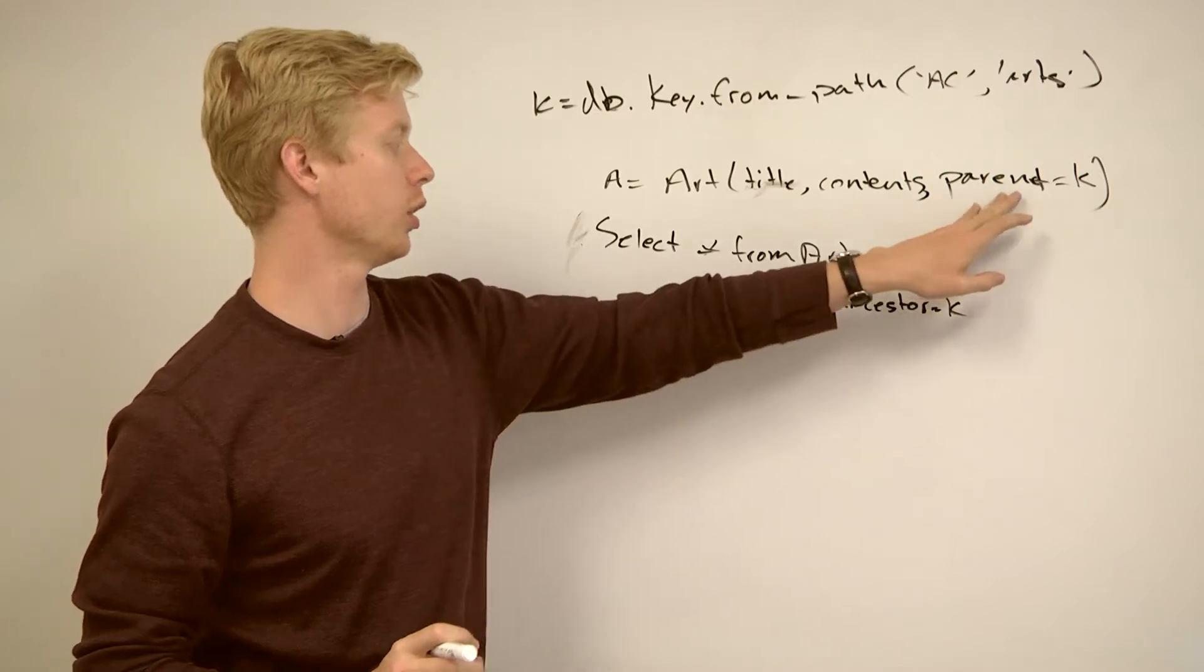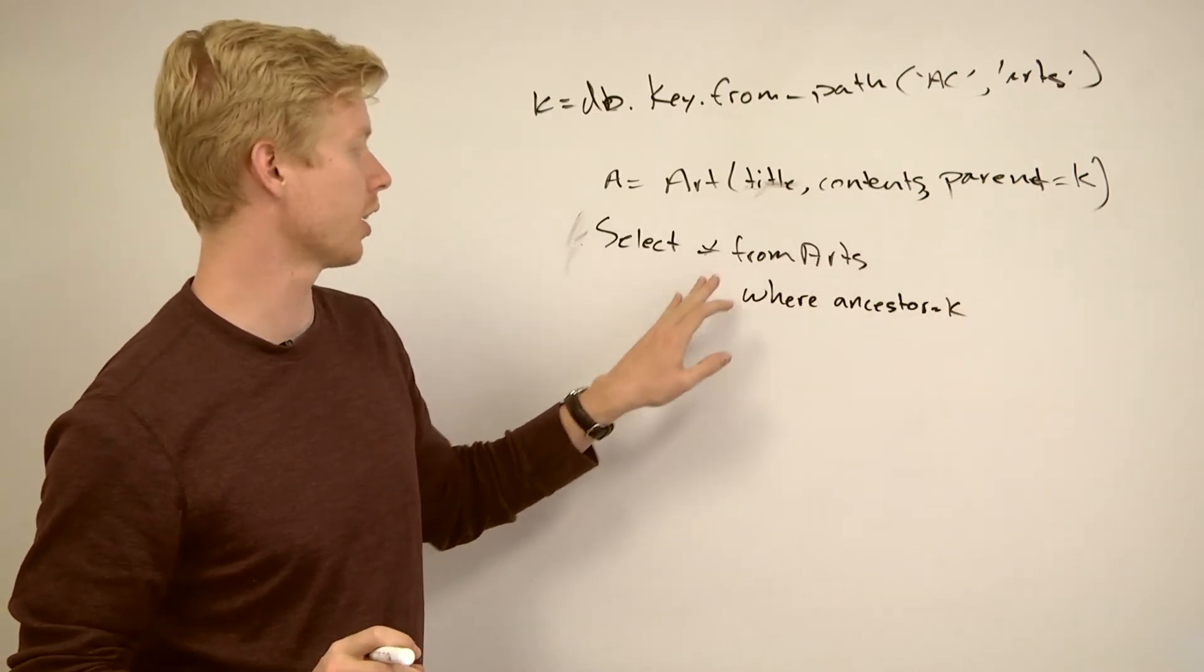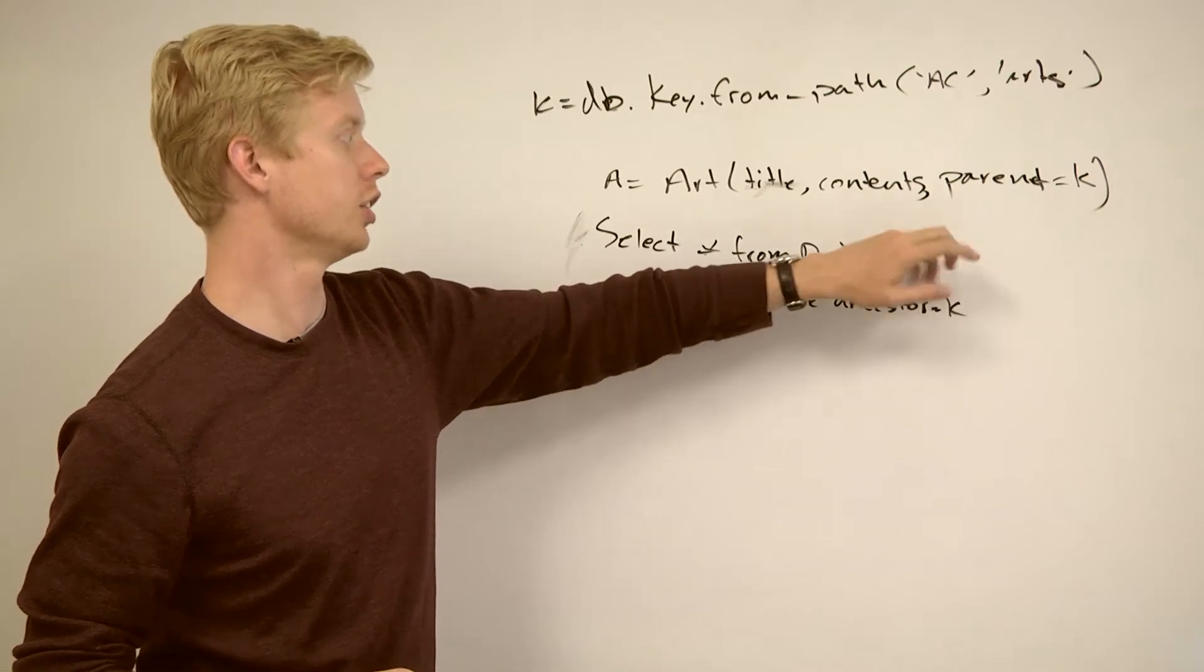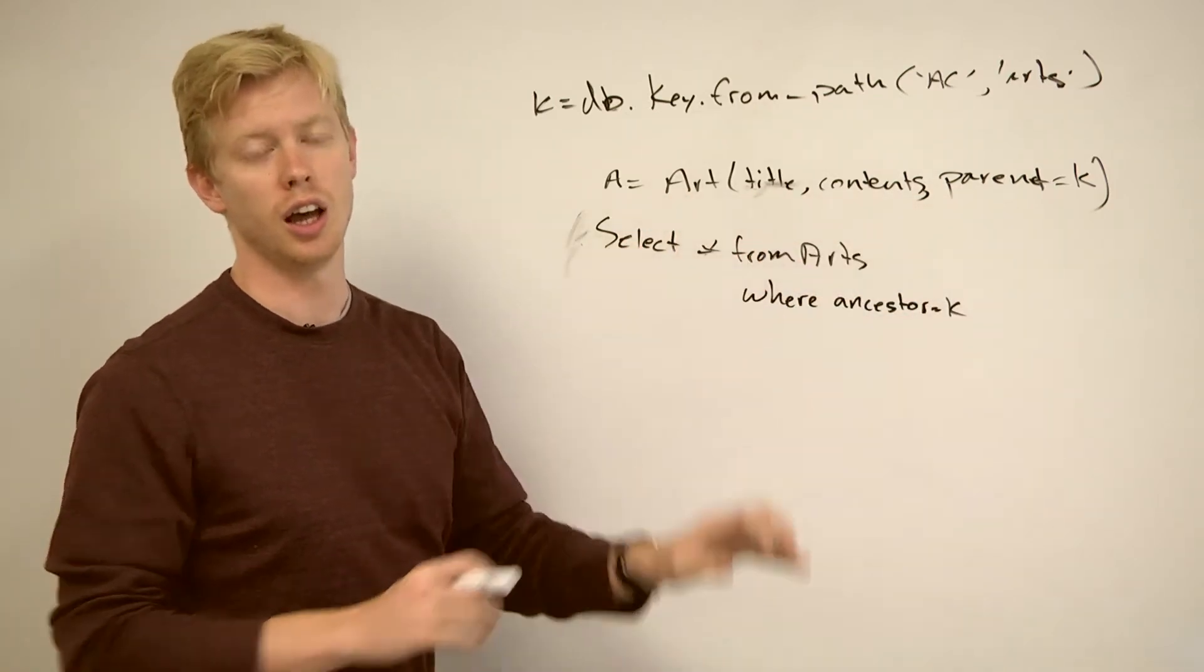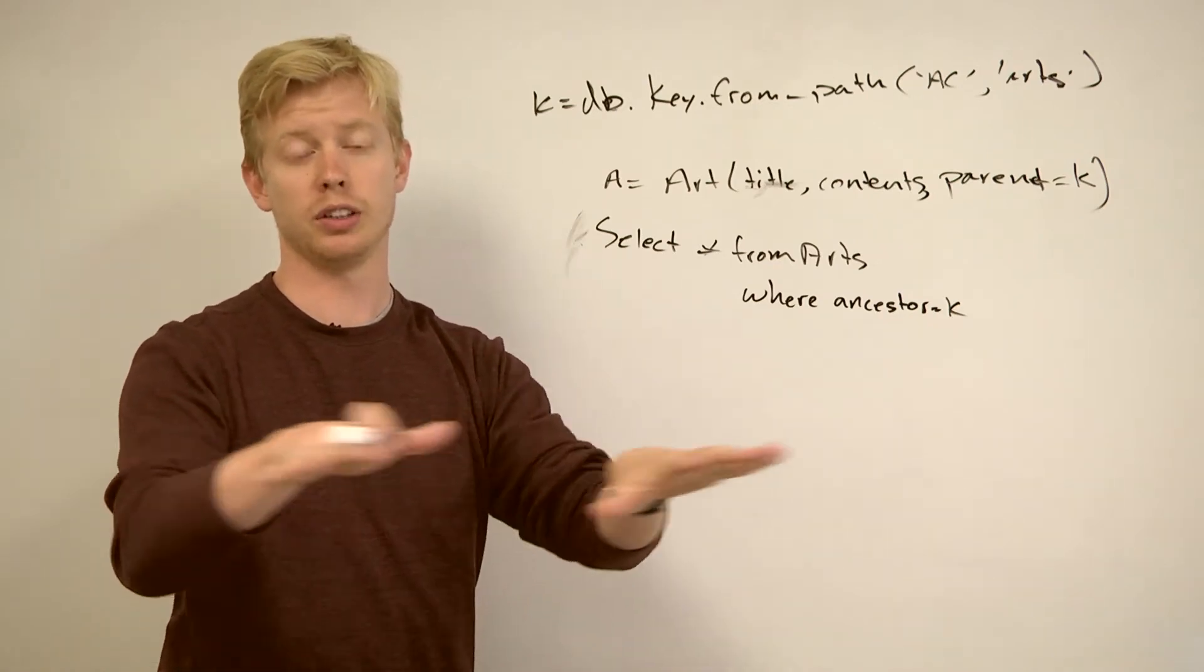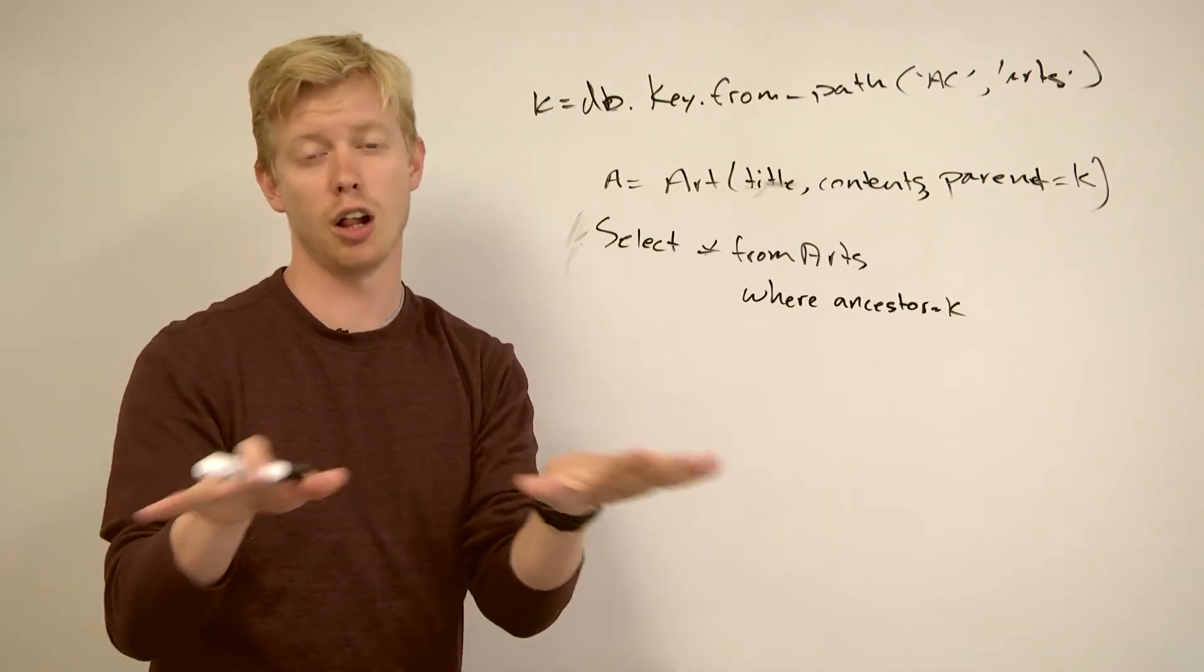And what that does is it gives you this property in datastore that the query will be consistent. So that means when you've inserted with this parent and then you immediately do a select star, if I didn't have this where ancestor equals k, there's a chance I might not actually get the element I just inserted because of the way datastore works with this possibly being stored over multiple machines and sharded and all of that.